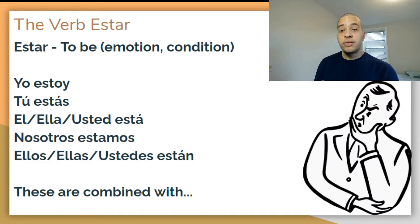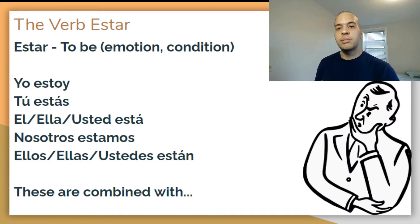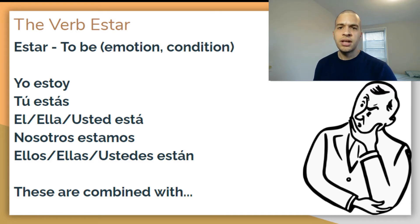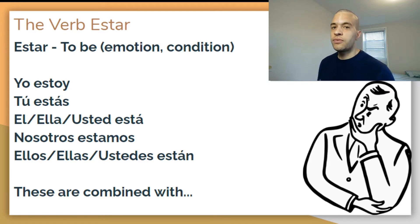So first we need to talk a bit about the verb ESTAR. ESTAR is used in a similar way to the verb SER, but it's used mainly for emotions, conditions, things that are temporary and won't be true forever.